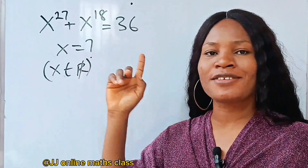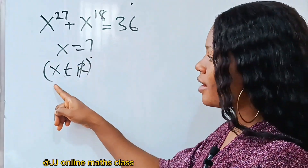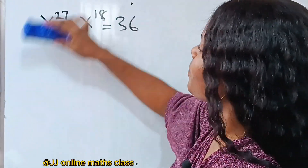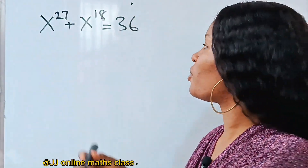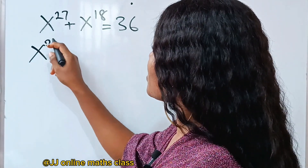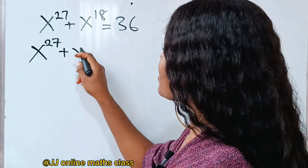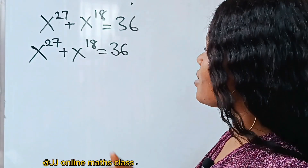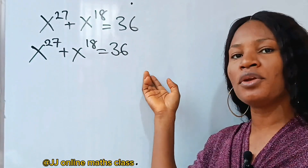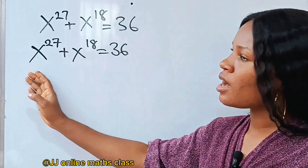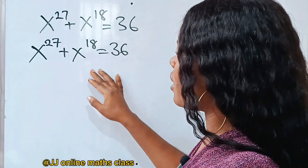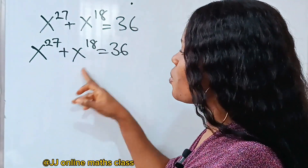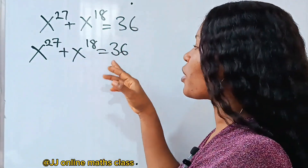We have an interesting question on the board. Let's find the value of x, and x must be real. The question is: x to the power of 27 plus x to the power of 18 is equal to 36. Let's try to make this a polynomial. We need to factor out something that we can get raised to the power of 3 plus that same thing raised to the power of 2 that will give us 36.